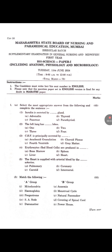3. CSF is principally secreted by which structure? 4. Erythrocytes are produced in which organ? Answer: 4. Bone marrow. 5. The heart is supplied with arterial blood by which arteries? Answer: 5. Coronary arteries.